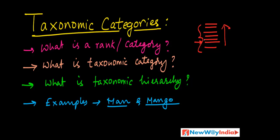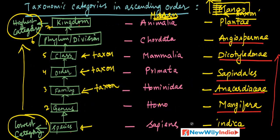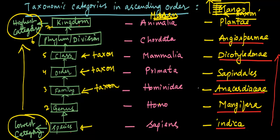Each category fits in the taxonomy — that is why it is called a taxonomic category. Man: Homo sapiens. Mango: Mangifera indica. I hope you enjoyed this video. I will go into details of kingdom, phylum, and class in the next video — please watch that. Thank you so much, please subscribe to the channel.